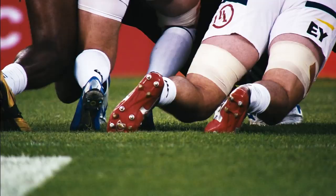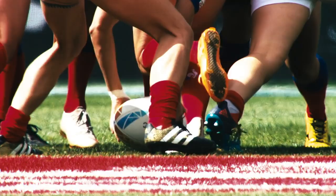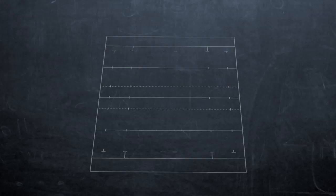The three-person scrums are a notable element of the game of sevens. You have to think of it more as a scrimmage than a traditional scrummage in 15s. Let's take a look at the roles and tactics within it.